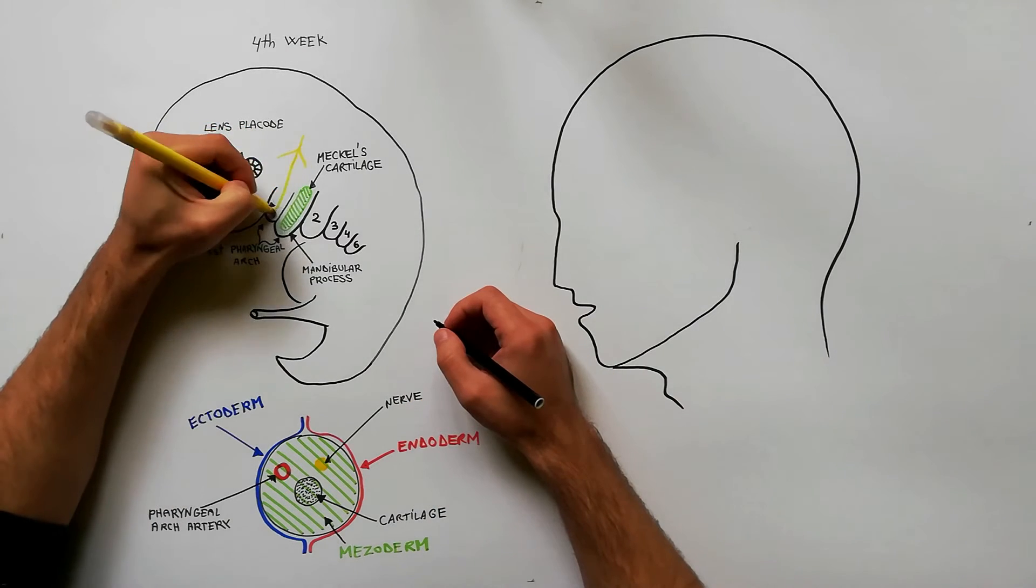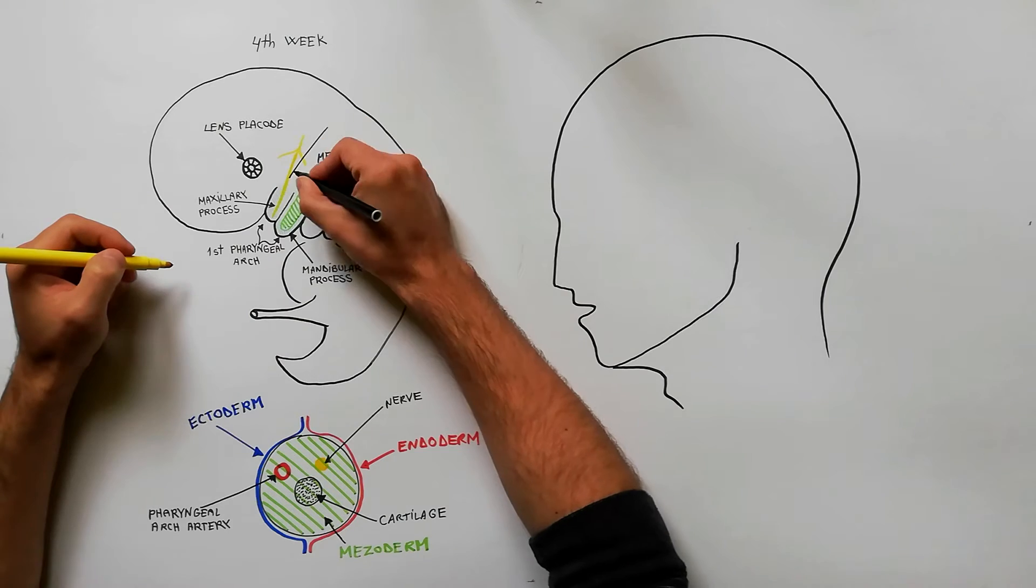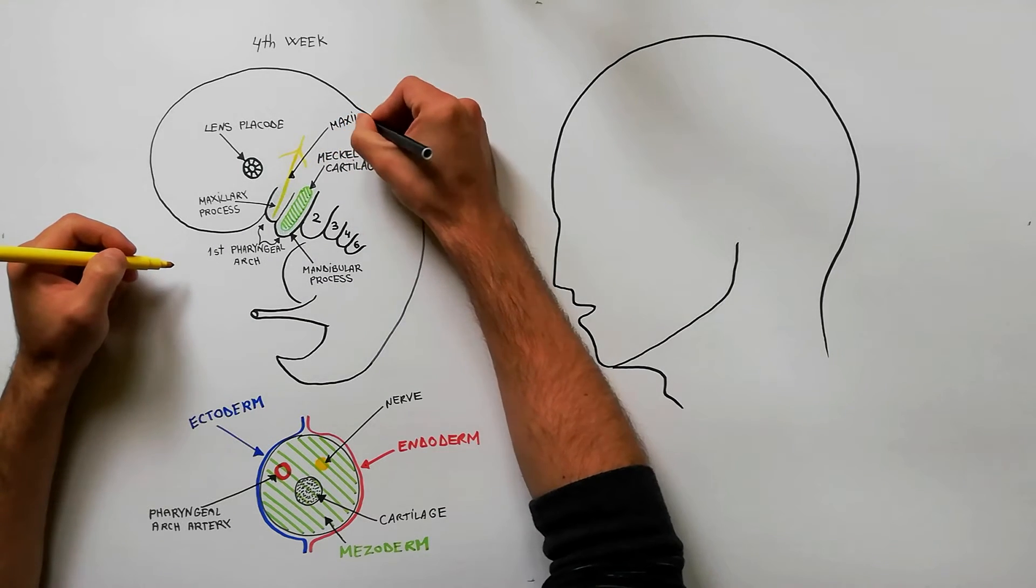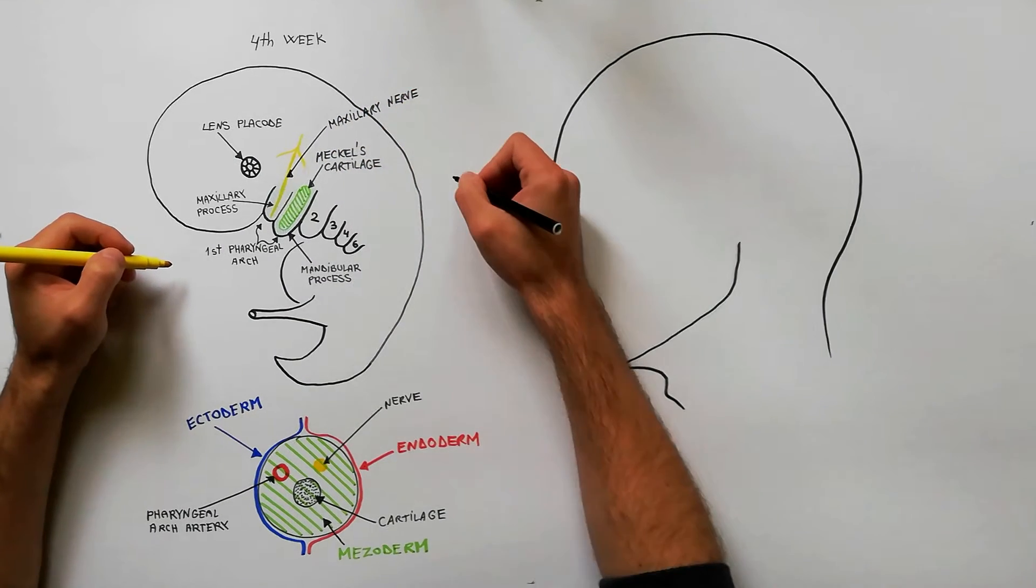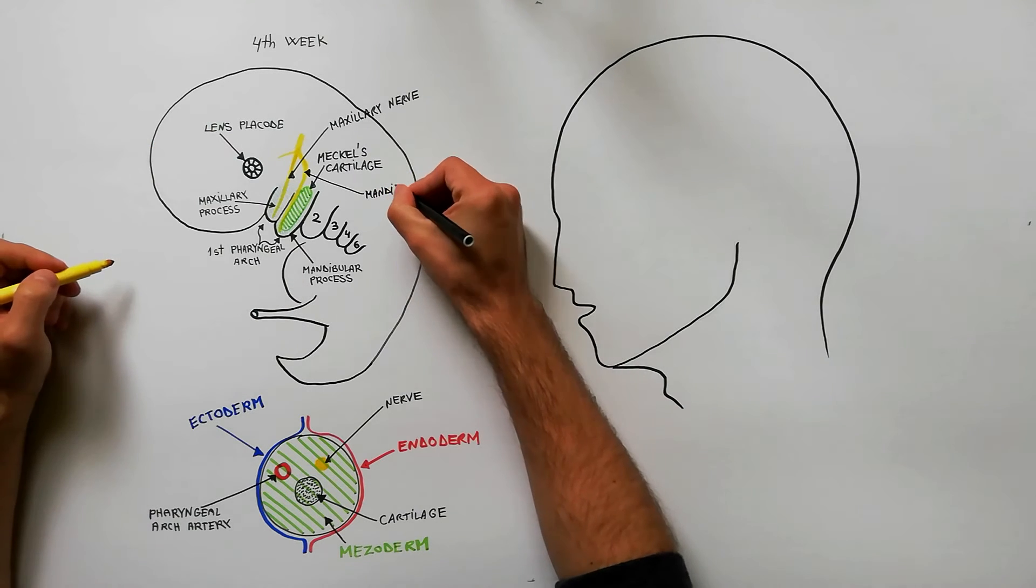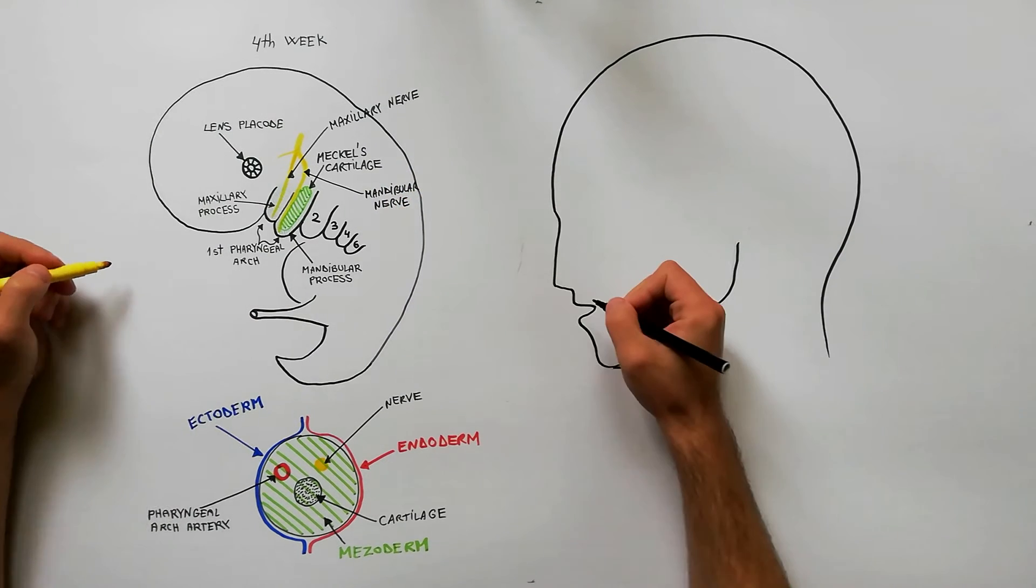The first pharyngeal arch contains two nerves: the maxillary nerve for the maxillary process and the mandibular nerve for the mandibular process.